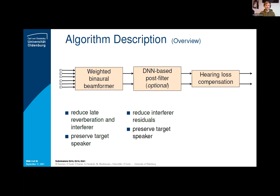Our systems tackling this scenario are combinations of up to three cascaded blocks. As first processing stage, we designed a convolutional beamformer, aiming at dereverberation and interferer reduction, and it should preserve the target. After this, to further reduce residual noise, we designed an optional DNN-based post filter. The last stage aims at increasing intelligibility for a specific hearing-impaired listener by listener-dependent hearing loss compensation.